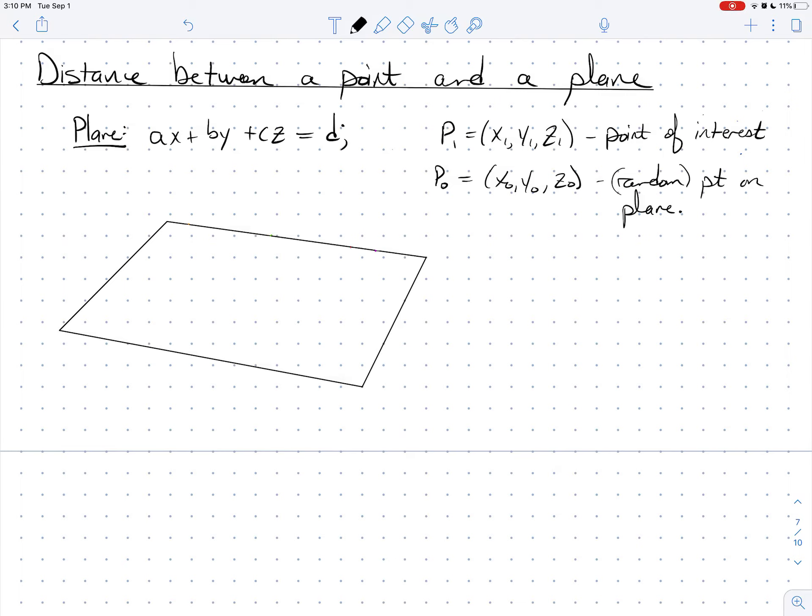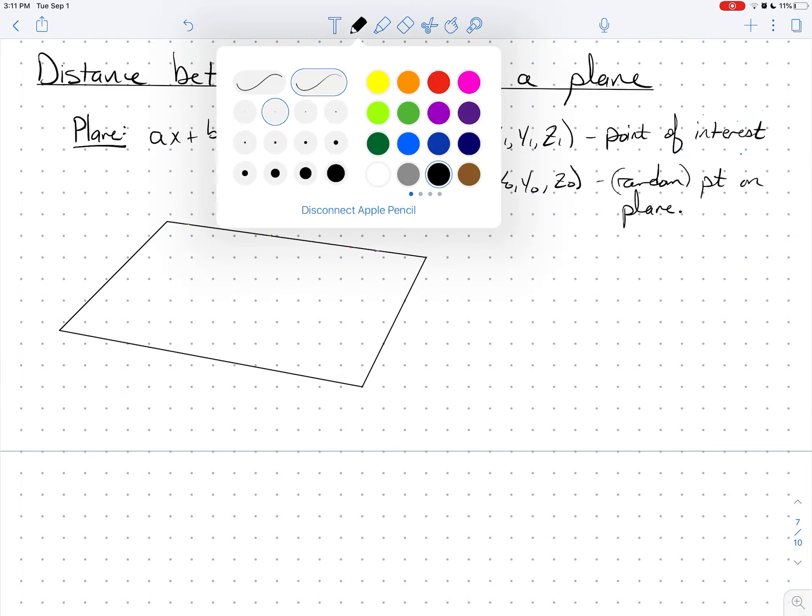All right, I want to end this lecture by discovering a formula together which is going to allow us to easily compute the distance between a point, a random point in 3-space, and a plane of your choice. And so we're going to write down the equation for our plane like this.